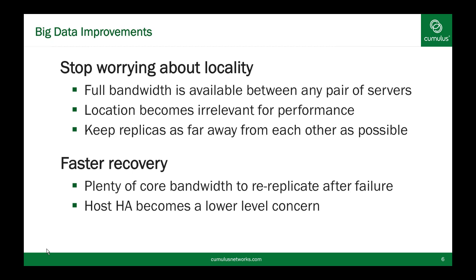So what does this mean for your big data deployment? It means you can stop worrying about locality. By building scalable bandwidth across your data center, you have the ability to deliver full bandwidth between any pair of servers. Where your jobs start relative to where the data resides is less critical in a scalable Layer 3 leaf-spine fabric. This also allows you to optimize placement of replicas very far apart from one another, so you don't risk losing data because replicas happened to be on the same server or rack. You now have the ability to distribute it further across your infrastructure and deal with survivability of any one rack going down.